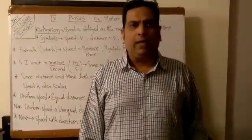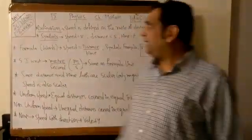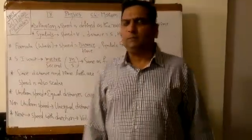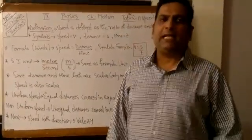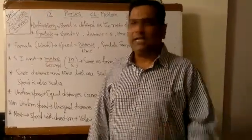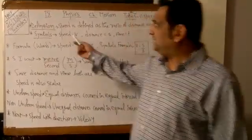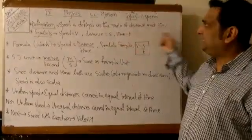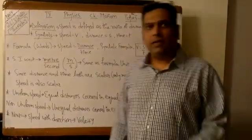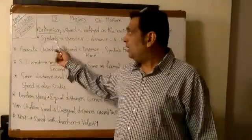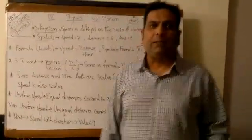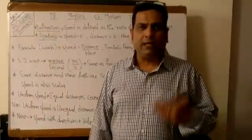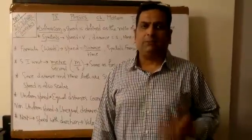Now related to distance, the next topic is speed. What is the definition of speed? Speed is basically the ratio of distance and time. The speed is symbolized by V, the distance is symbolized by S, and the time is symbolized by T.